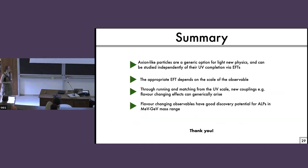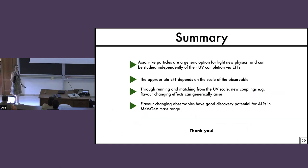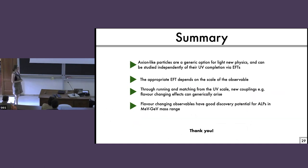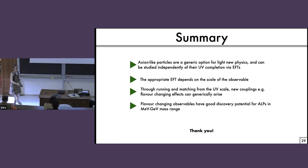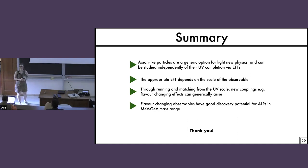So my summary: axion-like particles are a generic option for light new physics. They're worth looking for just in case the heavy new physics has some broken symmetry. If you use EFTs, you can study them without particularly worrying about the UV completion. By running and matching from the UV scale, you generically get new couplings that create new phenomenology. And flavor-changing observables are a good place to look in the MeV to GeV mass range. Thank you.